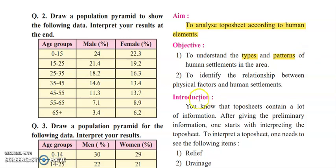The next objective is to identify the relationship between physical factors and human settlement. Physical factors and human settlement are totally related. If a place is physically fit, then definitely the population will be more. If some place is not physically fit for human settlement, or the climate is not favorable, then ultimately the population density there will be less.